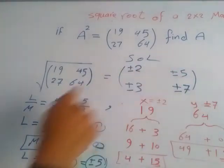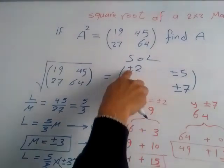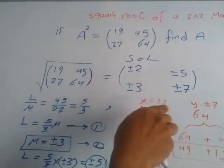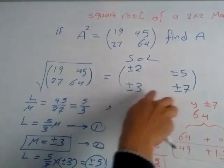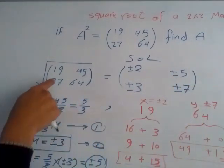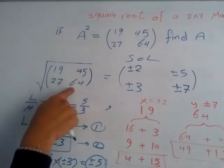Check it out: square this matrix (2 5; 3 7) or use negative signs (−2 −5; −3 −7) and make sure it's going to give you back (19 45; 27 64).